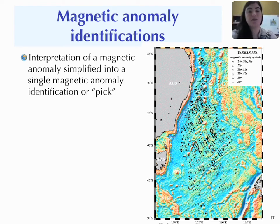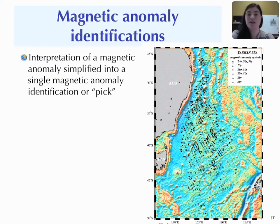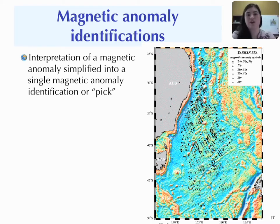We take what we correlated from the magnetic profiles and place it onto the map, creating magnetic anomaly identifications — often called magnetic anomaly picks. We translate from the magnetic anomaly profiles onto the map, with each anomaly picked represented by a peak or a dot. Here we have about six different time periods where we've picked magnetic anomalies. Once we do that, we get an idea of the correlations between profiles, the orientation of spreading, and the age of the oceanic crust.